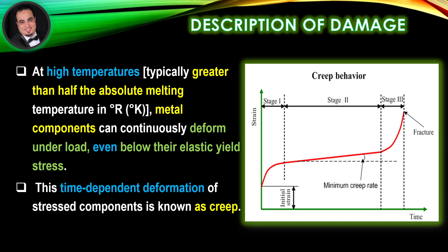As illustrated in the figure, creep occurs in three stages: Primary (Stage 1), Secondary (Stage 2), and Tertiary (Stage 3). Stage 1, or primary creep, occurs at the beginning of the test, and creep is mostly transient — not at a steady rate. Resistance to creep increases until Stage 2 is reached.